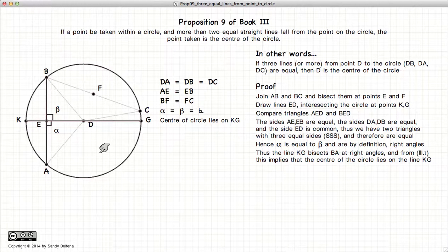Now if you recall from Proposition 3.1, finding the center of the circle, if we have a line or chord AB and another line that bisects it and is perpendicular, then the center of the circle must lie somewhere along this line, KG.